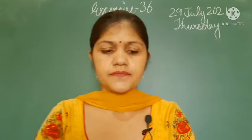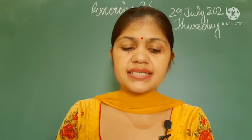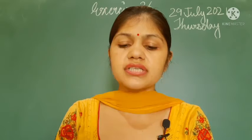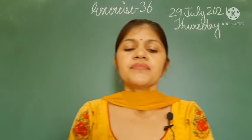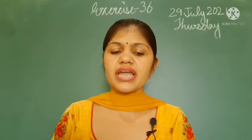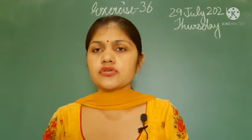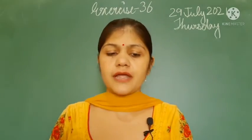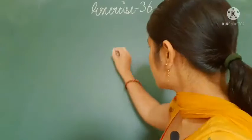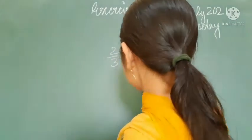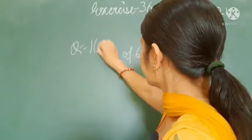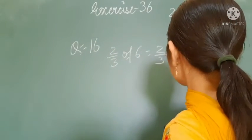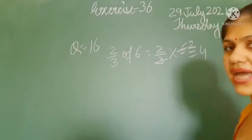Question number 16: Mona's school is 6 kilometers from her house. She covers 2 by 3 of the distance by rickshaw. 2 by 3 of 6 means 2 by 3 multiplied by 6 — 3 twos are 6 — so she covered 4 kilometers by rickshaw. The remaining distance is 6 − 4 = 2 kilometers.